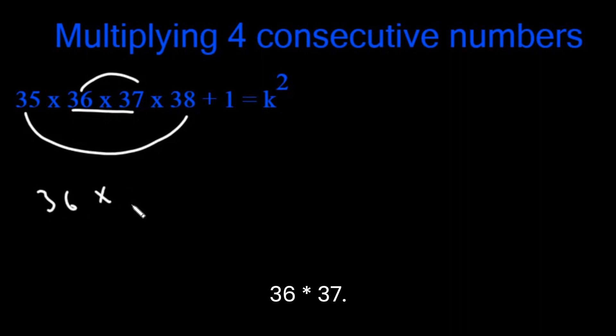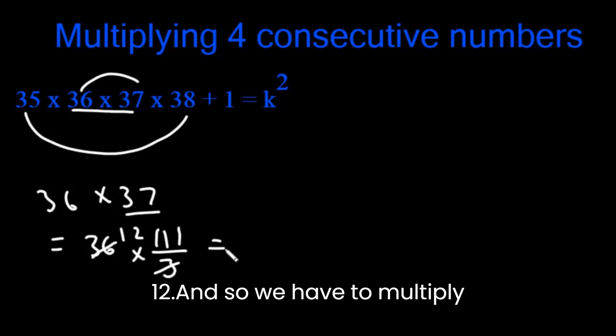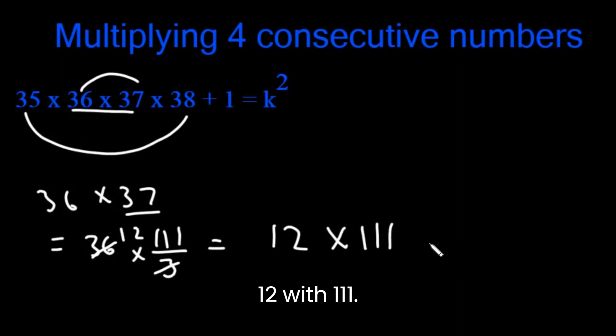So 36 times 37. 37 is 111 divided by 3. The 36 cancels with the 3, which is 12. And so we have to multiply 12 with 111.